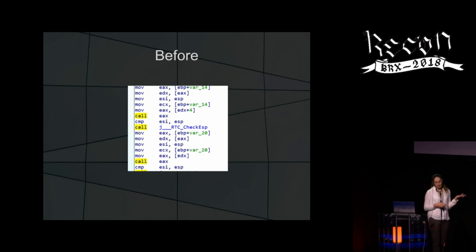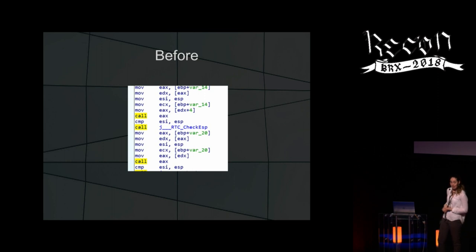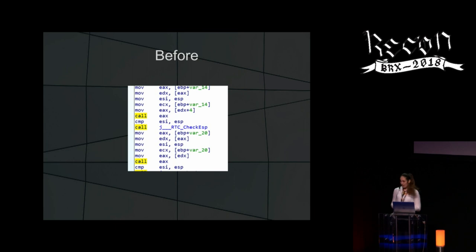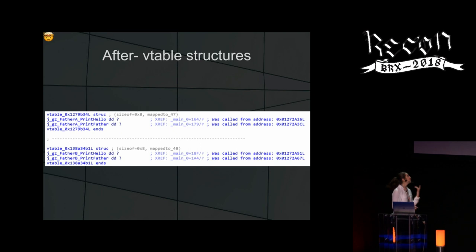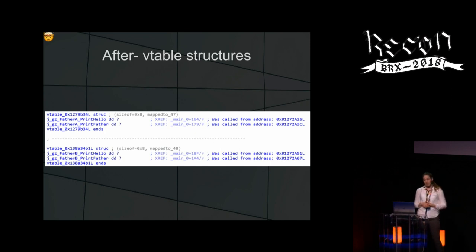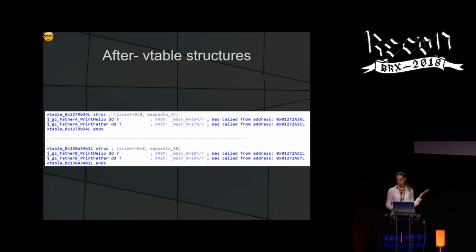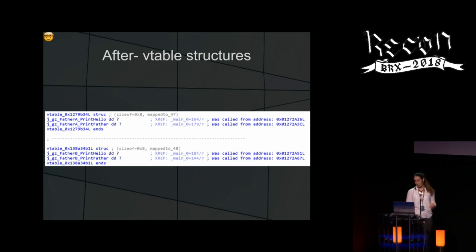This is how the code looked before running VirtualHaler. You can see opcodes and virtual calls, but nothing more than that. After running my code, Vtable structures are created automatically. You have the Vtable, the address to the Vtable for static analysis, the functions, and also comments showing where the functions were called from — which address the virtual call was made from.